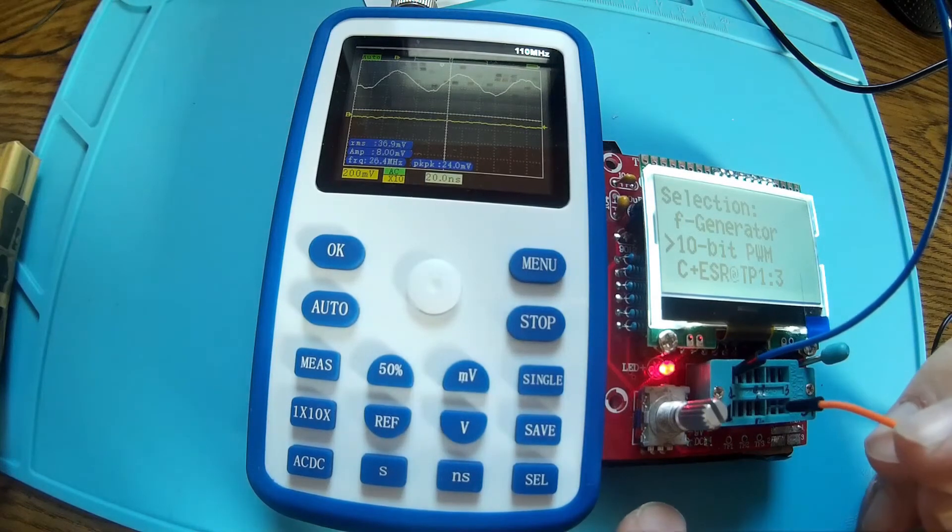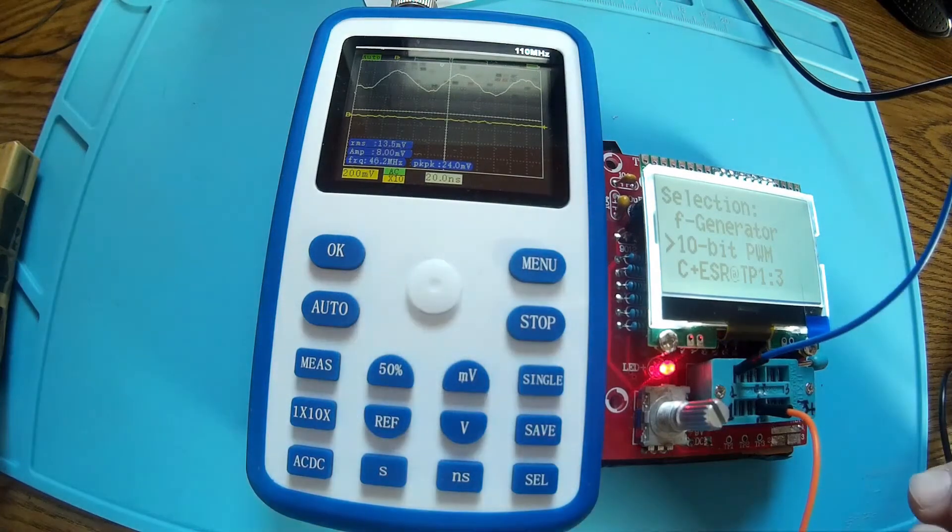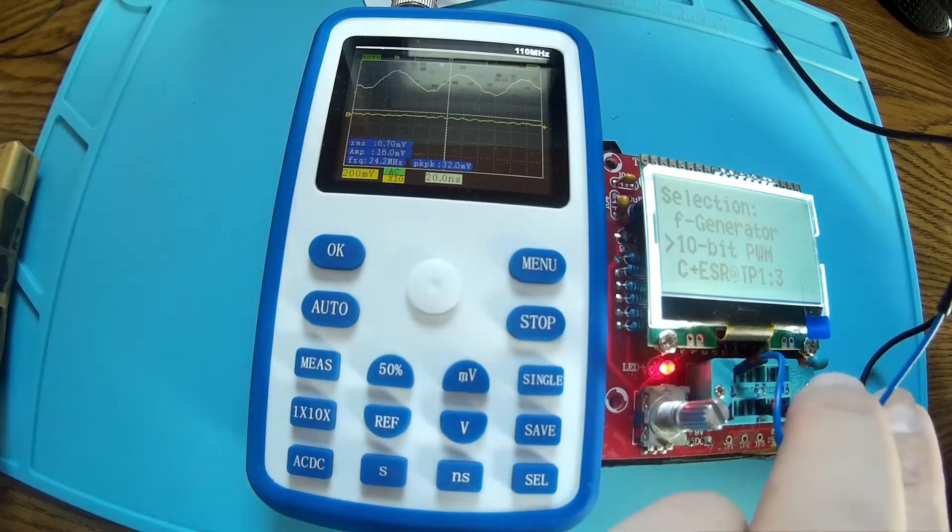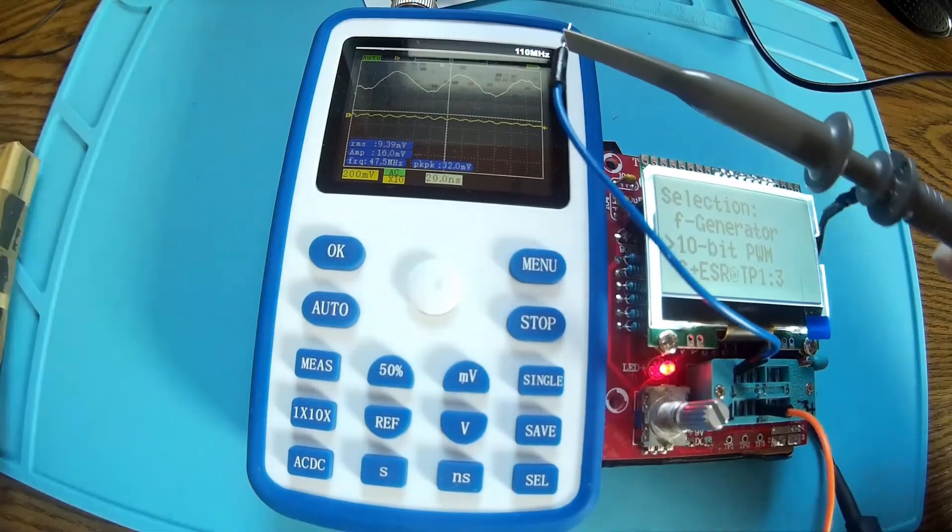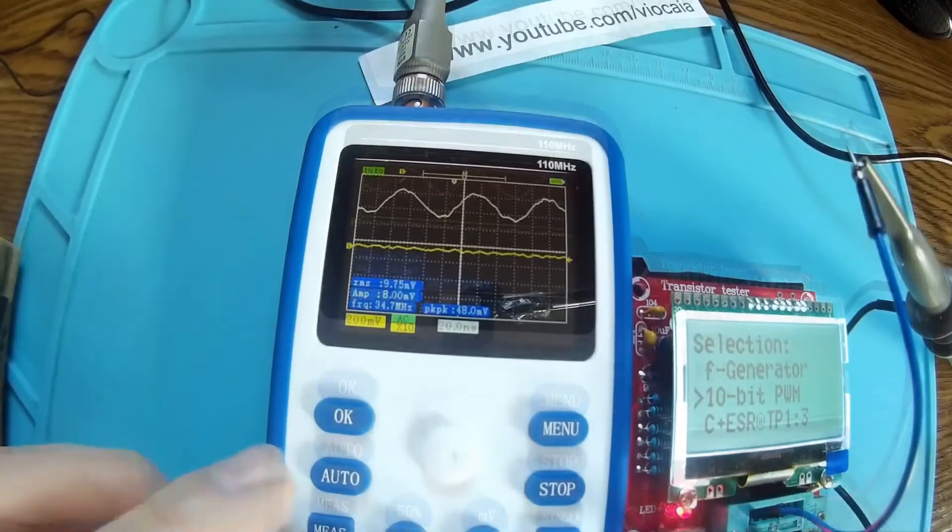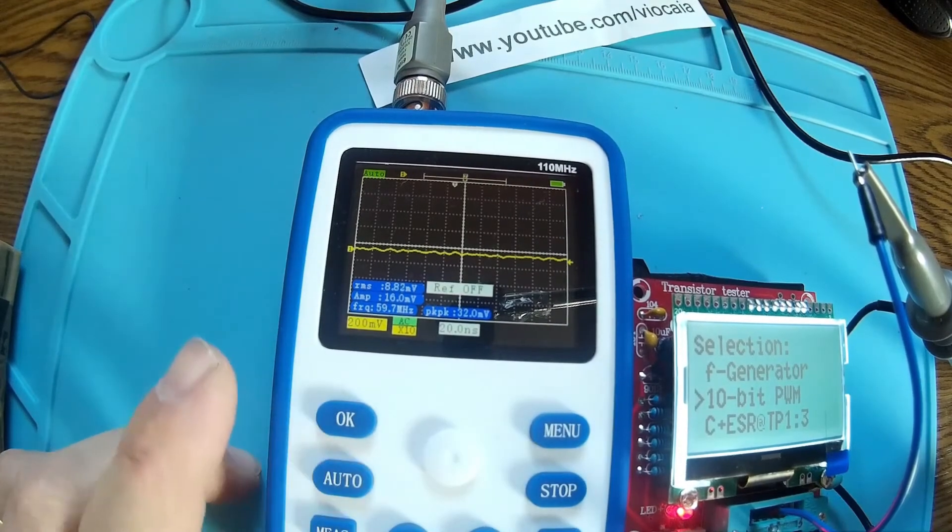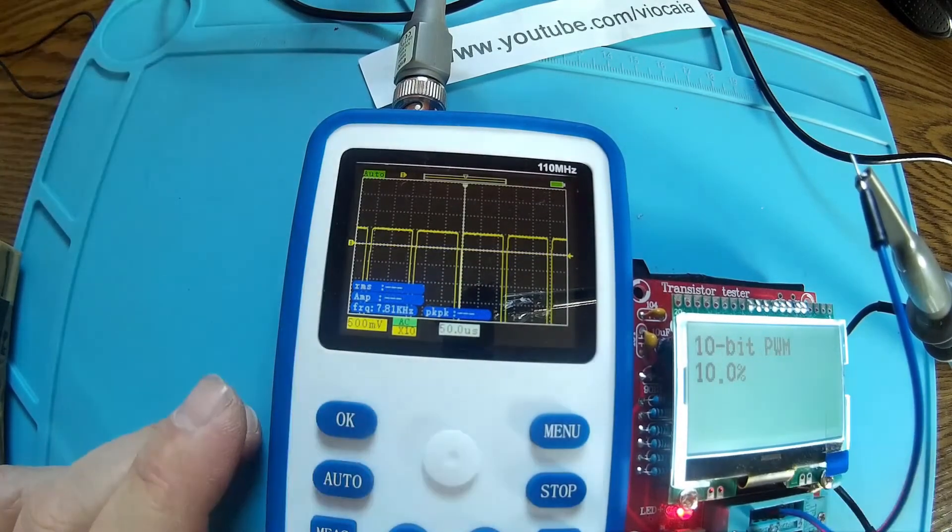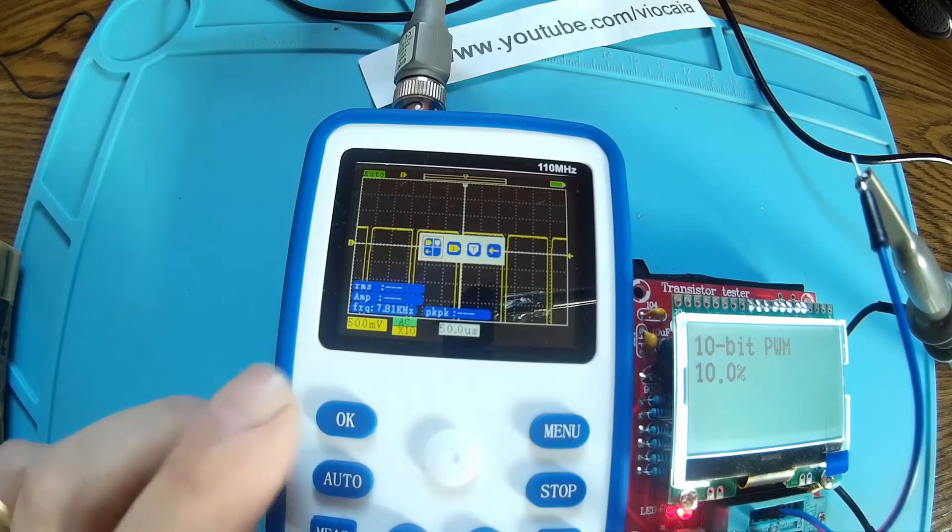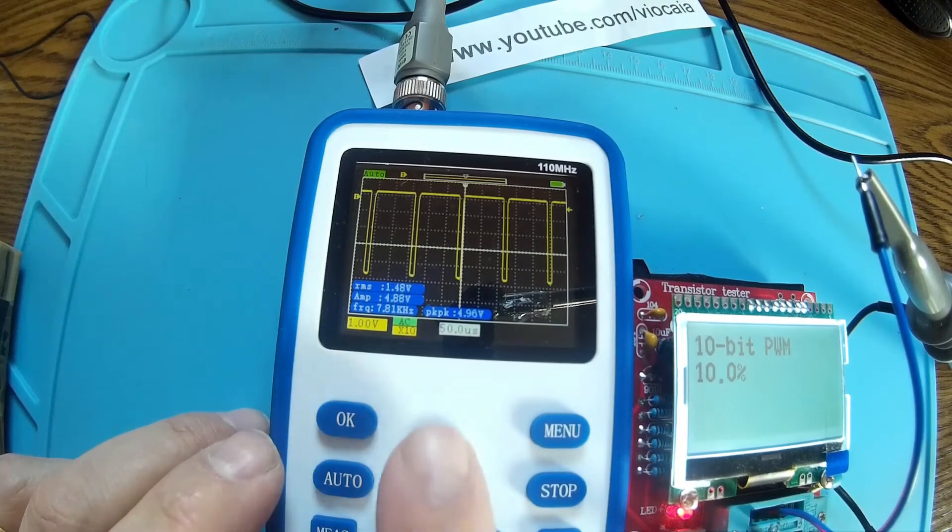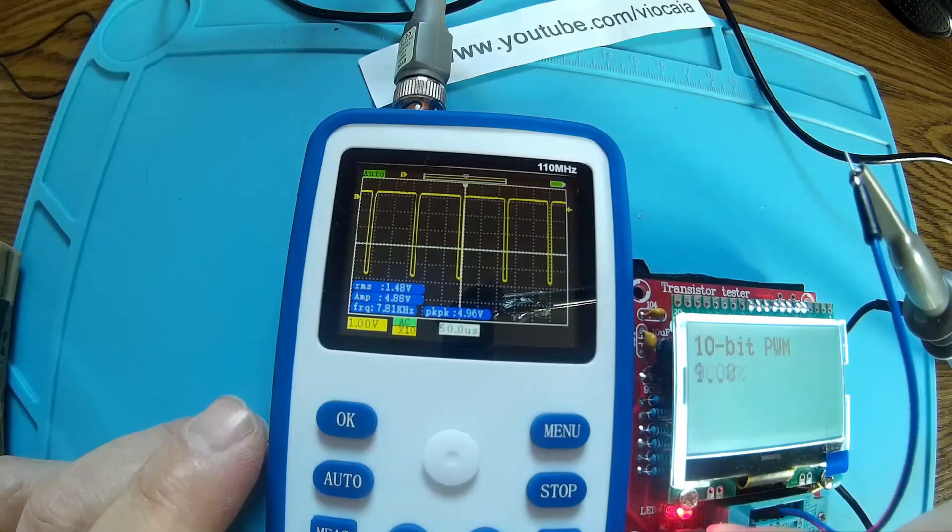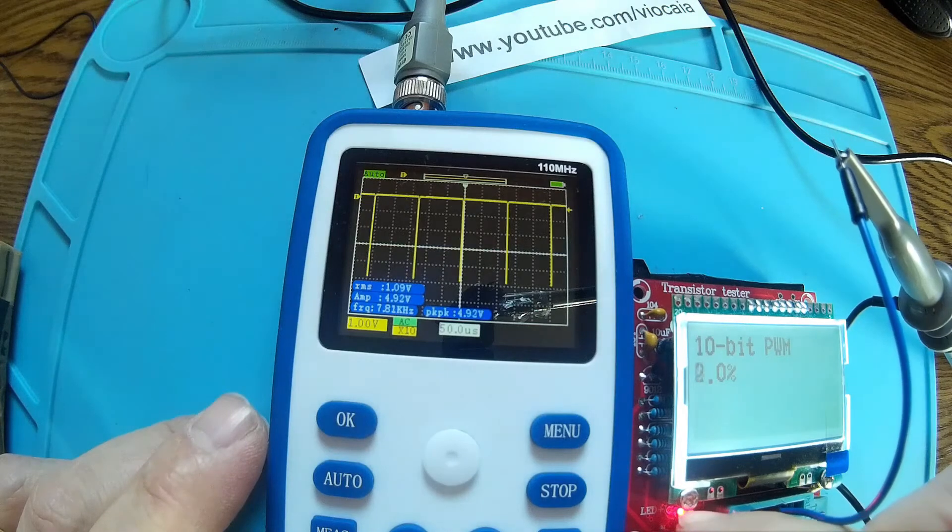I have these two little probes. Ground and signal. Probe at 10x and the meter to 10x. Okay, no more reference, nothing. Auto, and there we are. Let's get into the middle. Voltage down. Oh it's such a beautiful. So we are at 10% now, going down to zero.